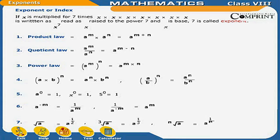Quotient Law: A to the power M upon A to the power N is equal to A to the power M minus N.